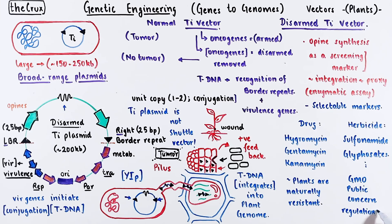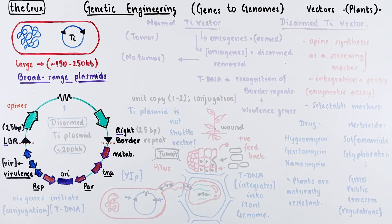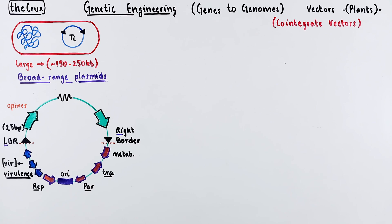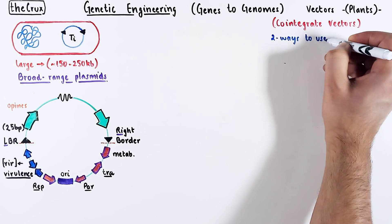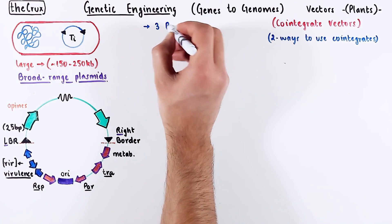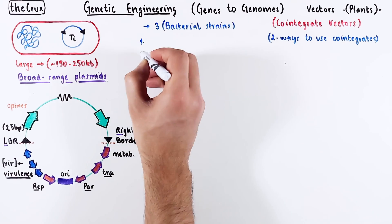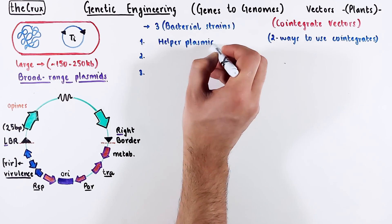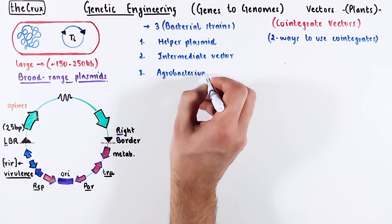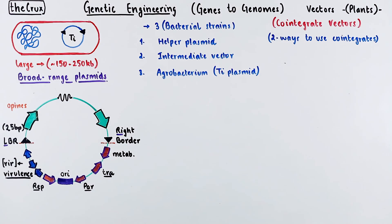Classic disarmed Ti vectors are not used anymore because they are way too big in size, and handling large vectors is very complicated. To deal with such complications, co-integrate vectors were developed. The most widely used method involves three differential bacterial strains: one that contains a helper plasmid, another an intermediate vector, and the third is the agrobacterium containing the Ti plasmid.